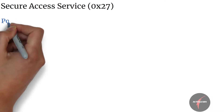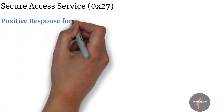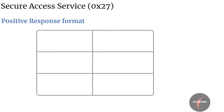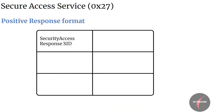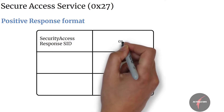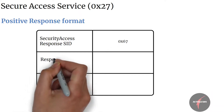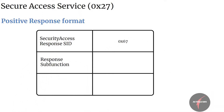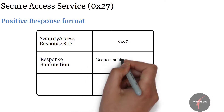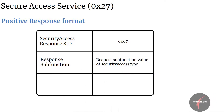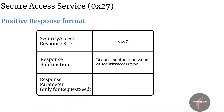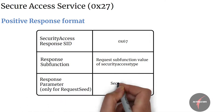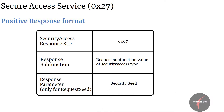Let's now have a look into the generic positive response format for security access service. Firstly, we have the secure access response SID which maps to 67. Then we have the sub-function which maps to the request sub-function value of secure access type. And lastly, in case of secure access type equal to request seed, we have the security seed parameter present in the response.